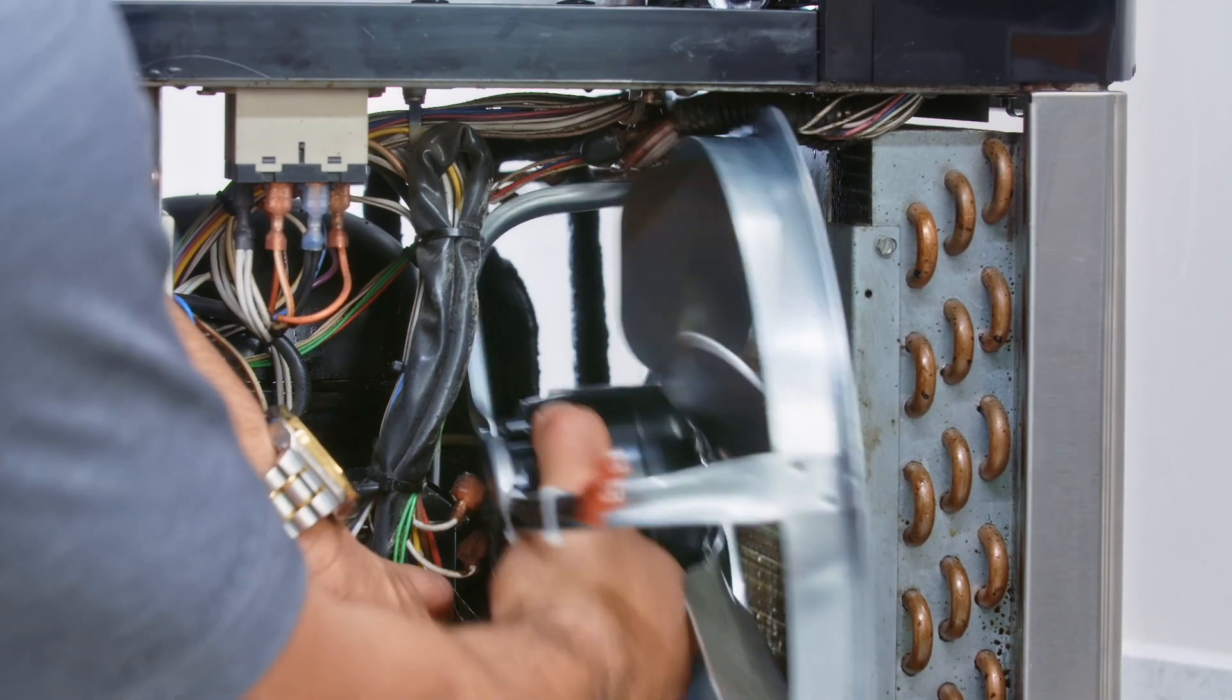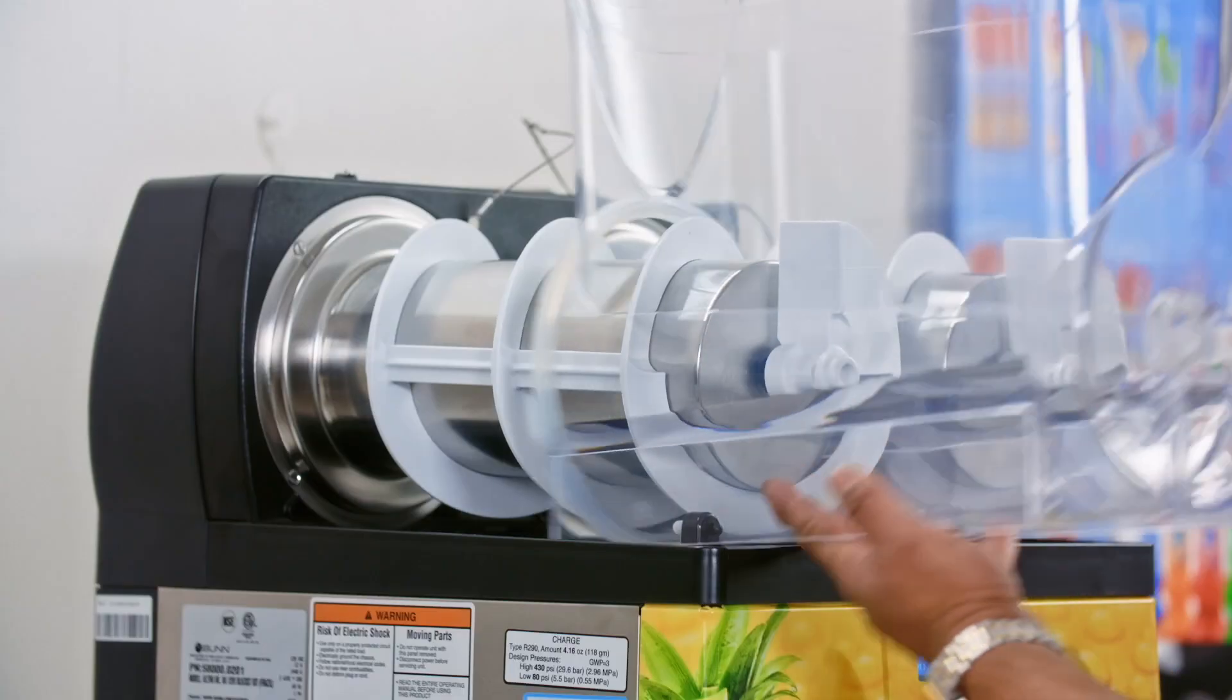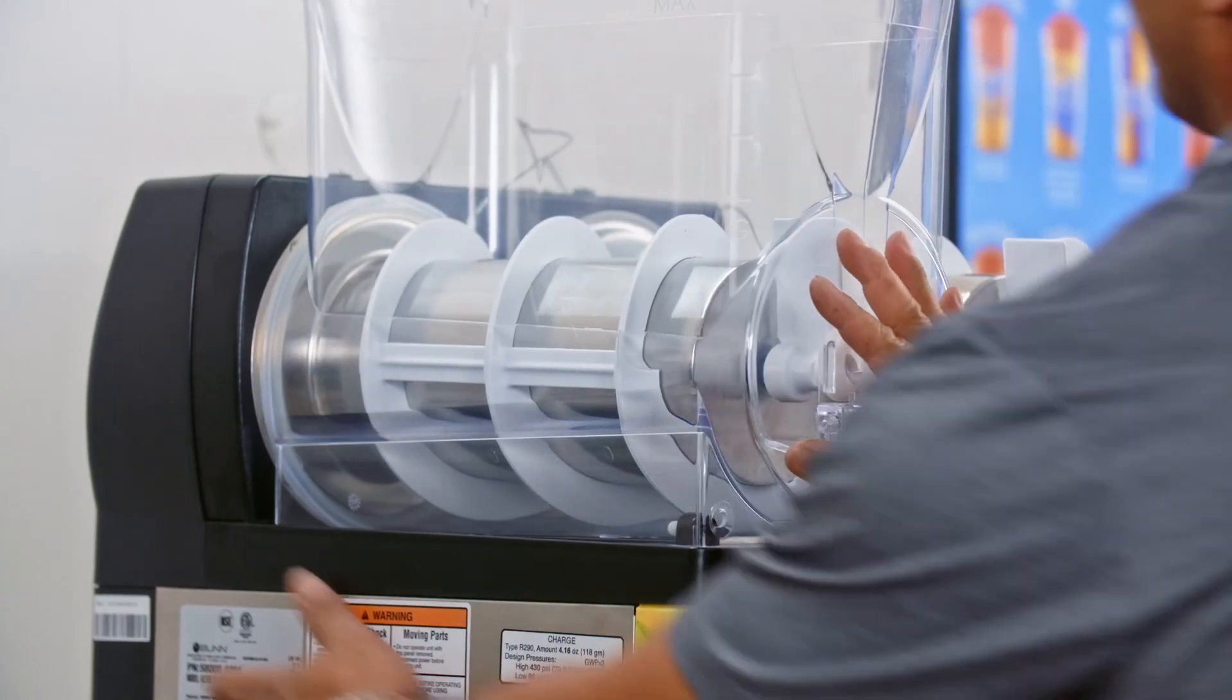Step 5. Reinstall the fan. Step 6. Ensure the machine's seals are replaced and the leak is fixed in addition to cleaning the product build up.